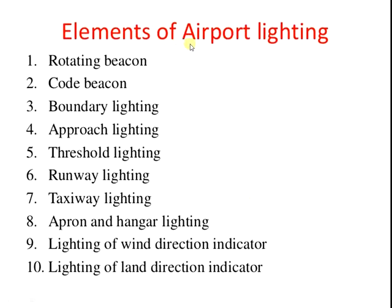The elements of airport lighting include various components. The first is the rotating beacon; second, code beacon; third, boundary lighting; fourth, approach lighting; fifth, threshold lighting; sixth, runway lighting; seventh, taxiway lighting; eighth, apron and hangar lighting; ninth, lighting of wind direction indicator; and last, lighting of land direction indicator.